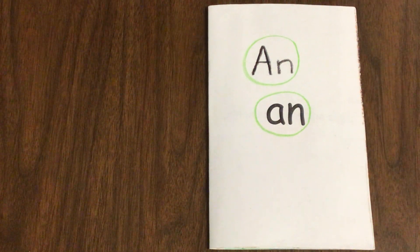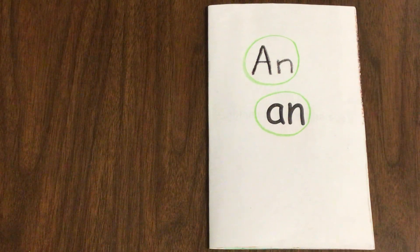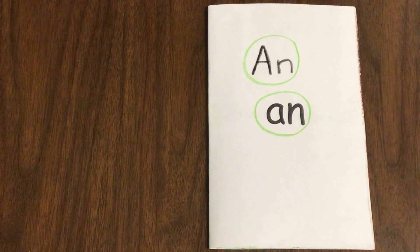Today we're going to read about the word 'an.' It has a short a sound — a — and then the n sound — n. A, n: an.